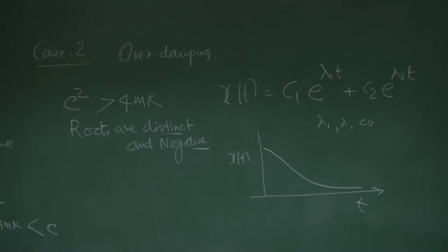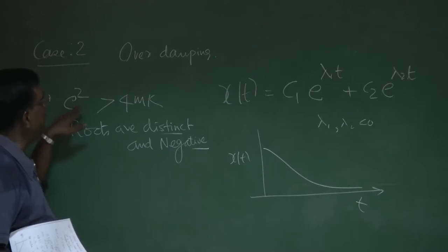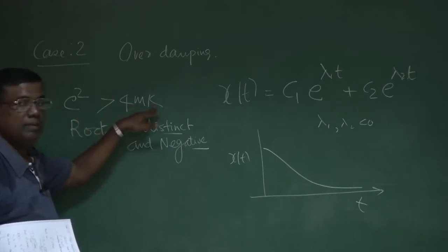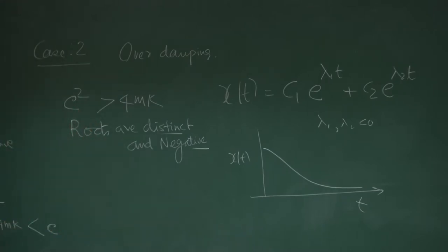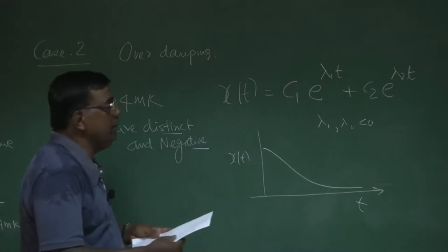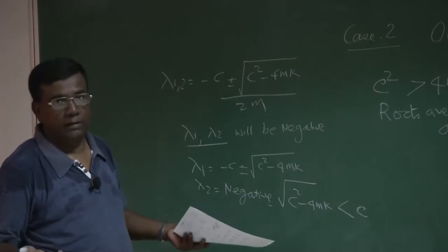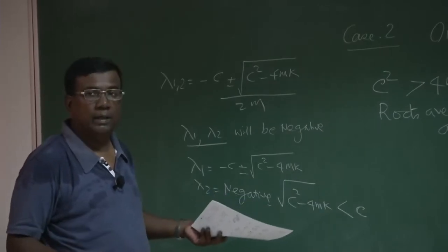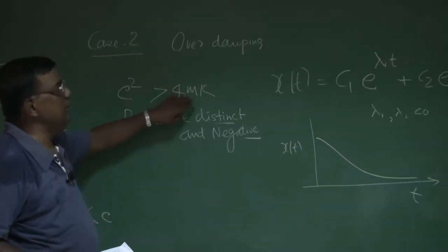What is the message? If you can select damping in such a way — high damping — such that c square is greater than 4 times mass times stiffness constant k, then there would not be any oscillation. The designer has a liberty: if he wants an over-damped system, he will select c with a high value such that the perturbed quantity decays like this. This demystifies that a mass-spring-damper system does not necessarily mean an oscillatory system. The designer has liberty to select values of c, m, and k to get the desired response.